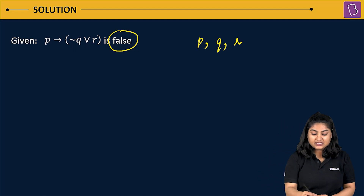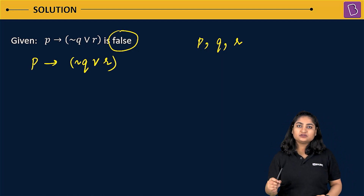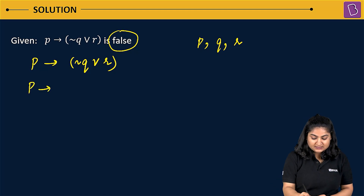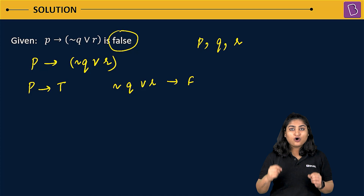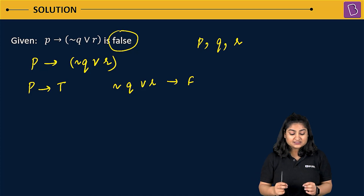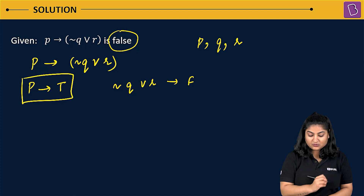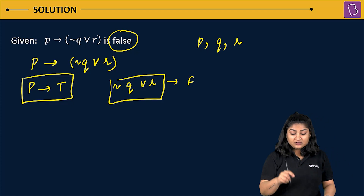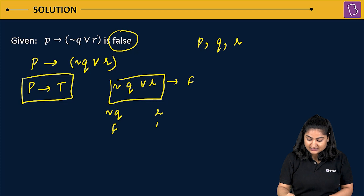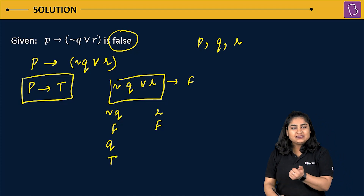If you focus on the statement P implies negation Q or R, this statement will have the truth value false only when P is true and negation Q or R is false. So P is true. Now, negation Q or R takes up the truth value false only when negation Q is false and R is false. If negation Q is false, then Q is true.